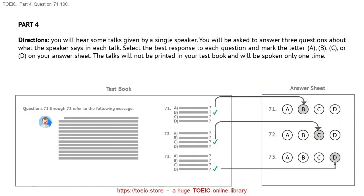Part 4. Directions: You will hear some talks given by a single speaker. You will be asked to answer three questions about what the speaker says in each talk. Select the best response to each question and mark the letter A, B, C, or D on your answer sheet. The talks will not be printed in your test book and will be spoken only one time.